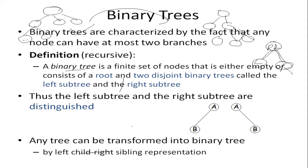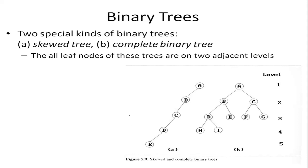In short, in a binary tree each node can have at most two children — just remember this. Binary trees can be categorized into some types. The two types shown here are skewed and complete binary trees. There is a third category — full binary tree — which we will come to a bit later. Let us first look at skewed binary tree.